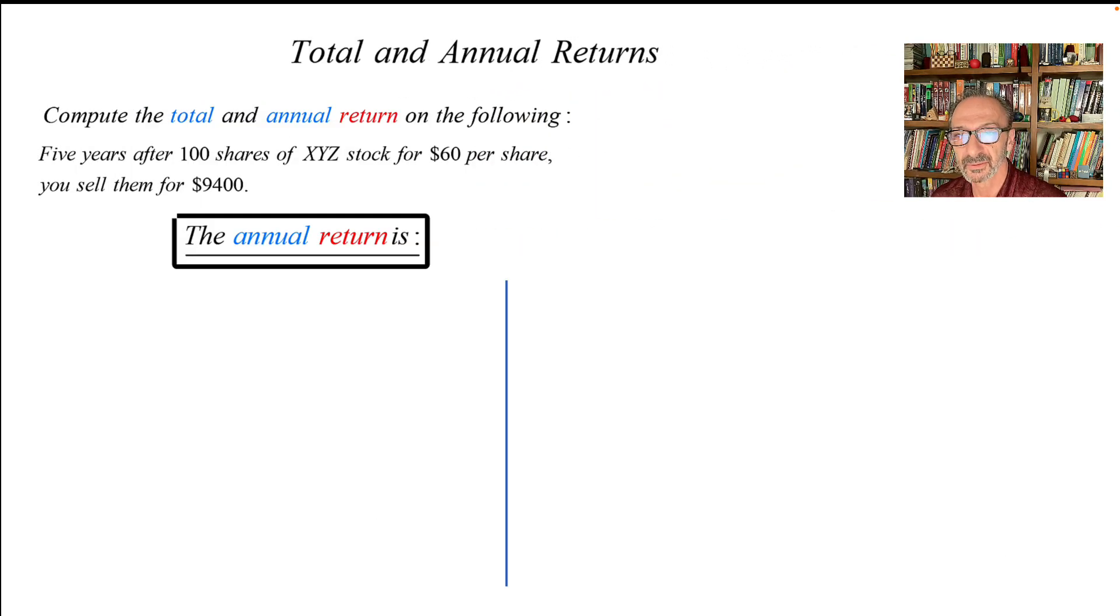The annual return is the following: the annual percentage yield, which is called APY, that would give the same overall growth in five years.